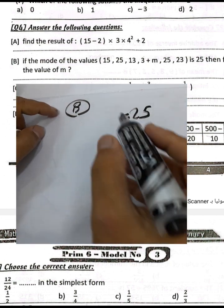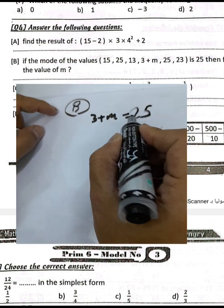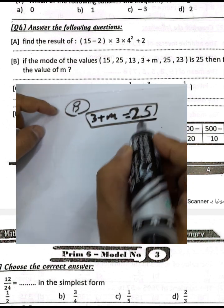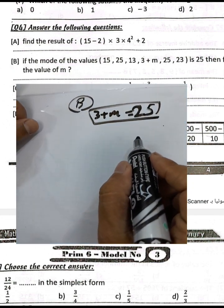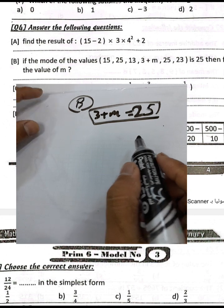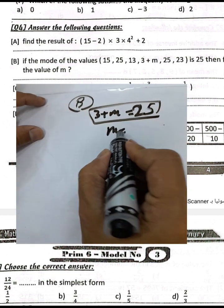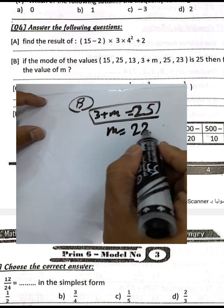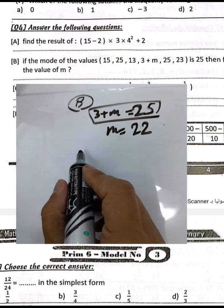Eight is the mode, then three plus m equals twenty-five because the mode was twenty-five — it is the most repeating value. So m equals twenty-five minus three, which equals twenty-two.